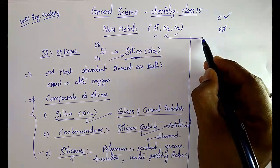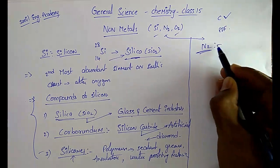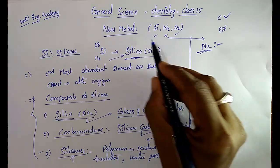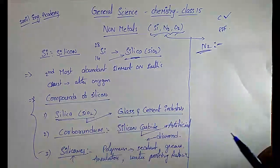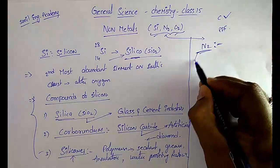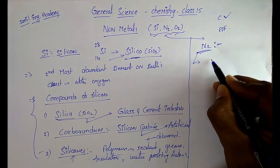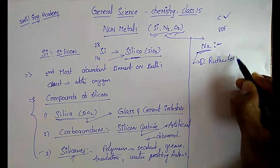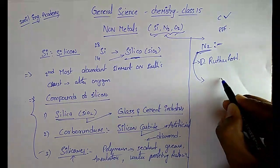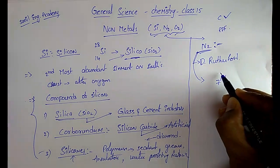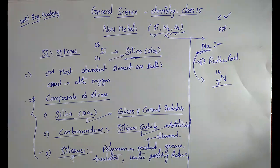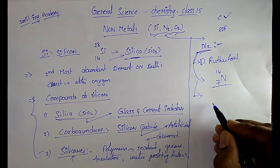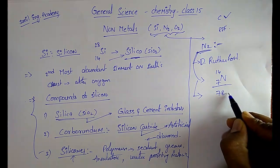The next non-metal is nitrogen. Nitrogen was discovered by D. Rutherford. The atomic number is 7 and mass number is 14. In our atmosphere, nitrogen is available at nearly 78 percent.